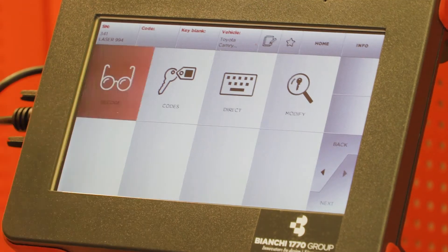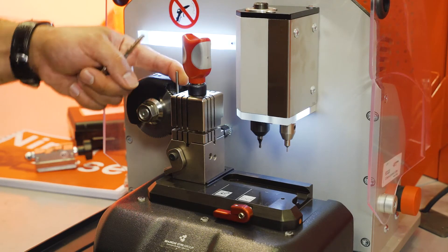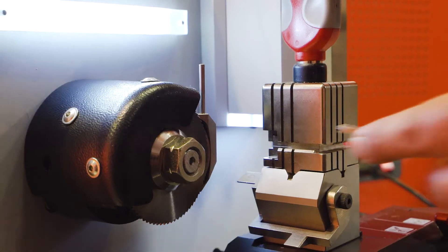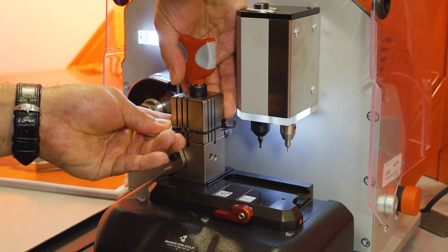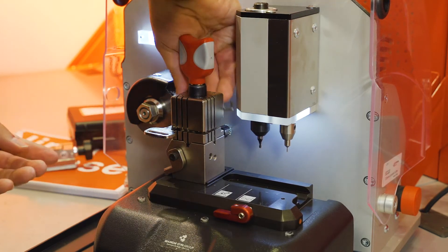Now, select decode, activate your tracer, take your shim, hold it directly behind the jaw in place. Ensure that the tip is touching the shim, lock your key blank down.